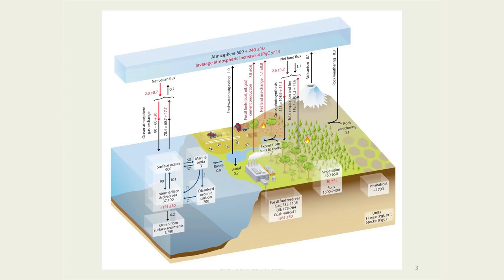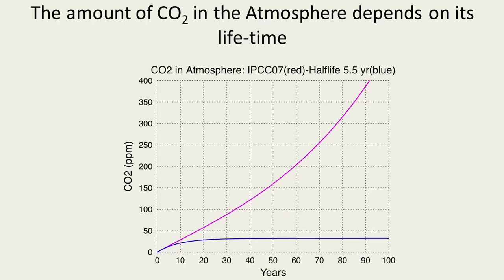Why did I get that sort of number? It's because of the lifetime of carbon dioxide in the air. There is a formula I found in the IPCC 2007 report called the Bern formula, which says that 20 percent of what we emit will be in the atmosphere forever — that's why we have the red curve growing. But the blue curve shows what has been measured: the half-life is about five and a half years.